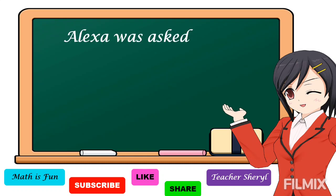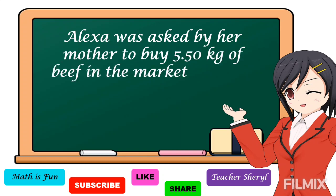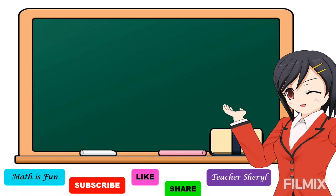Alexa was asked by her mother to buy 5.50 kilograms of beef in the market. How do we read this decimal? To answer our problem, we will use the place value chart to help you read the number.